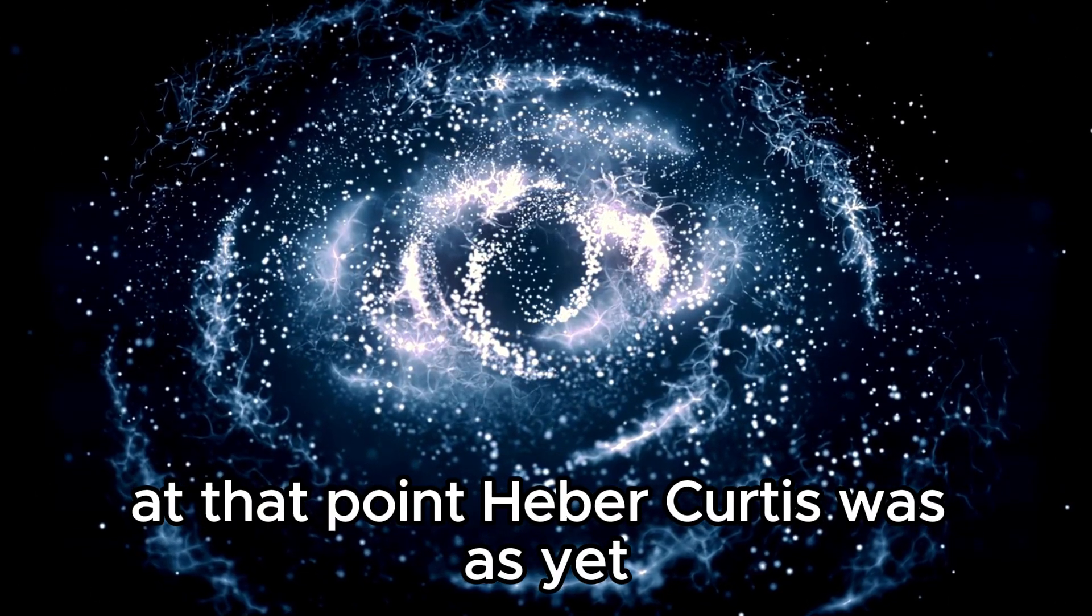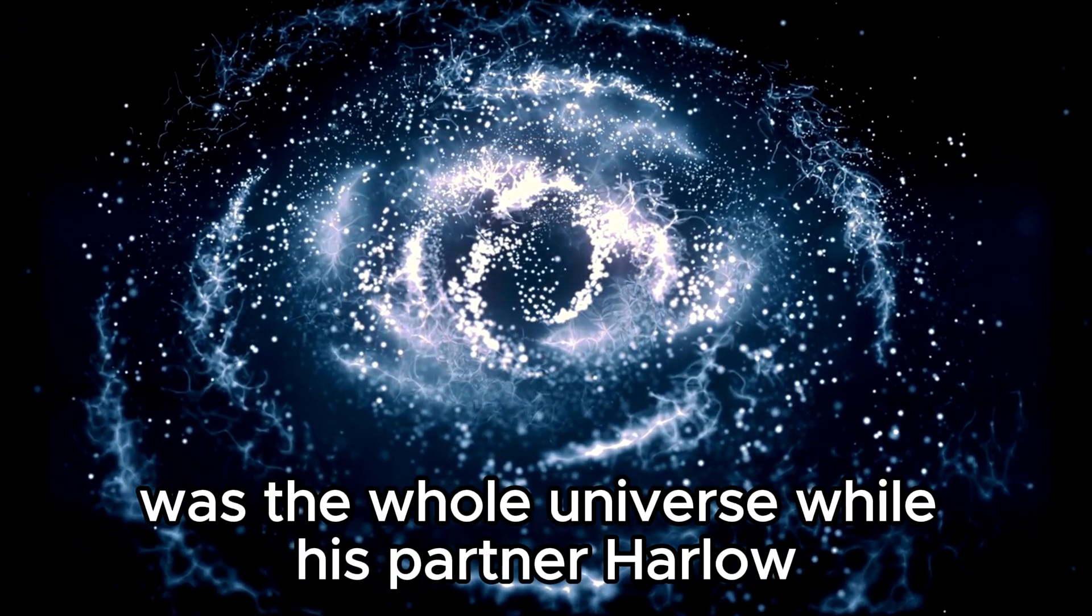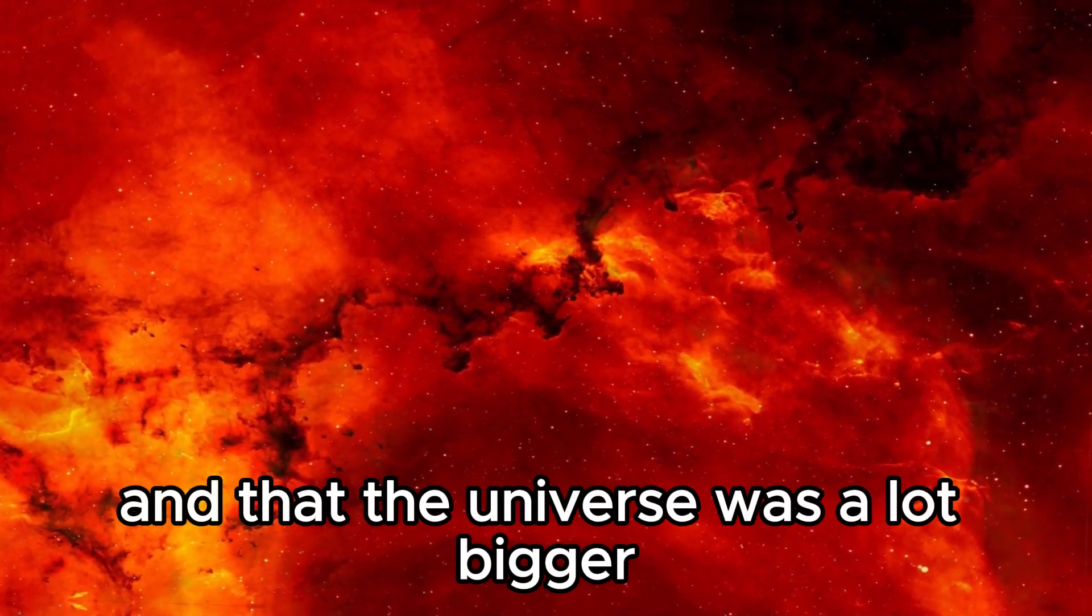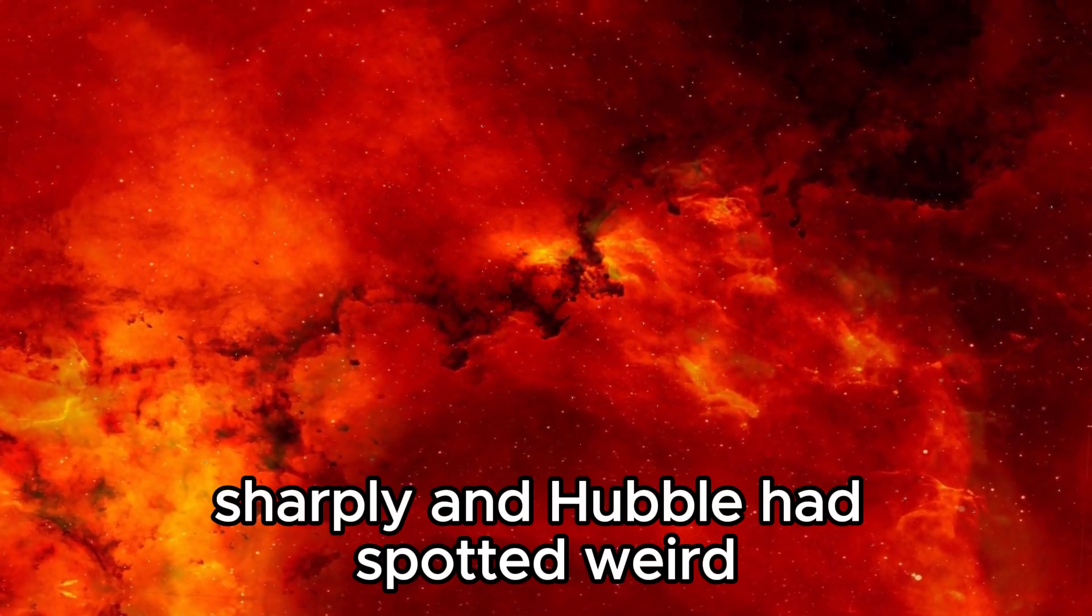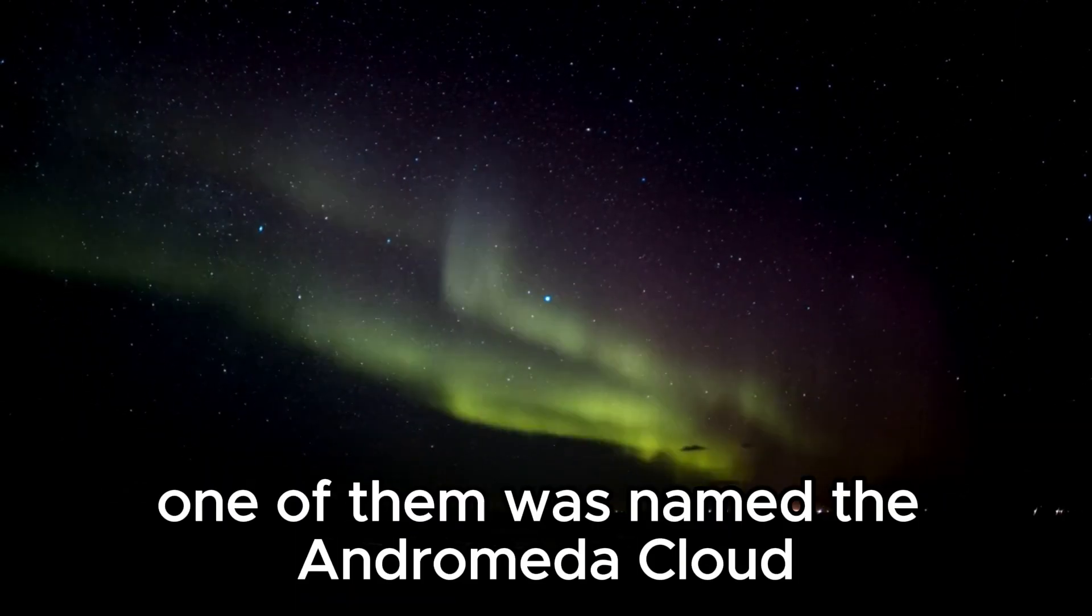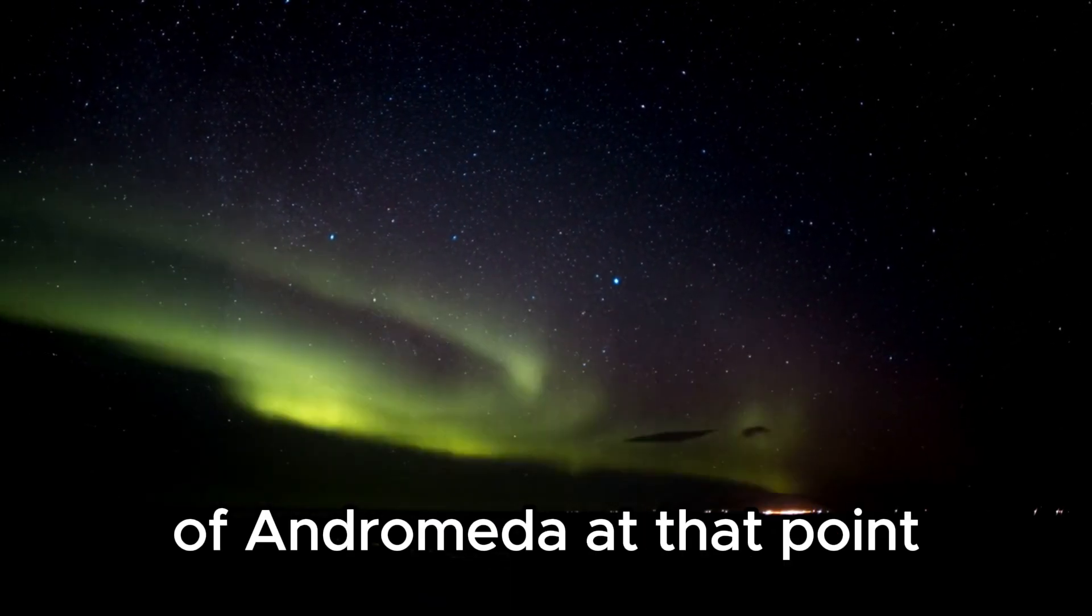At that time, Heber Curtis was one of the scientists who believed that the Milky Way was the entire universe, while his colleague Harlow Shapley thought there were other galaxies and that the universe was much larger. Shapley and Hubble had spotted strange nebulous clouds behind the boundary of the Milky Way. One of them was named the Andromeda nebula as it lies behind the constellation of Andromeda.